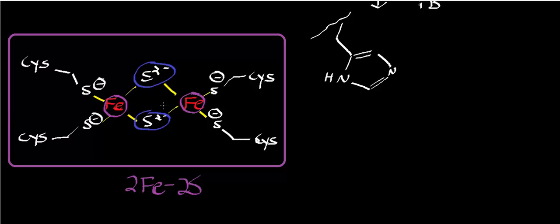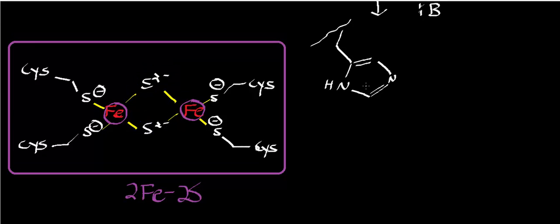The iron-sulfur center in ferrochelatase does not play a direct role in catalysis — this was determined through different studies. Mammalian ferrochelatase has this iron-sulfur center, but prokaryotes do not. There have been many theories about the purpose of this center; it was once thought to be part of catalysis, but that has been disproven. These irons are not the irons that get put into the porphyrin ring system. So the question is: what is the iron-sulfur center for? Well, for that, we have to discuss the regulation of this enzyme.